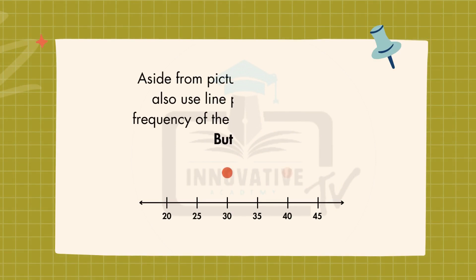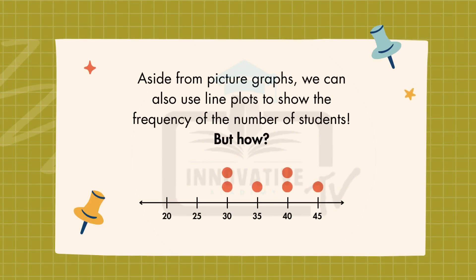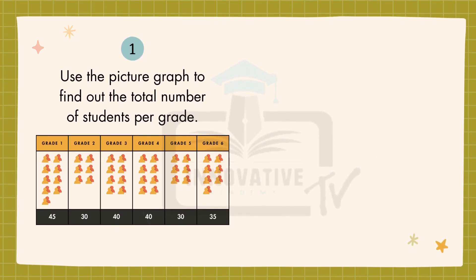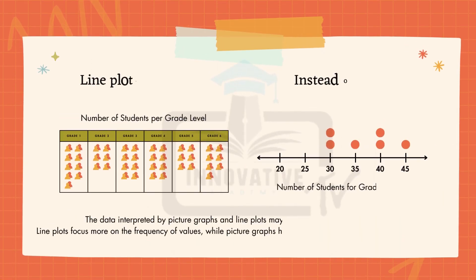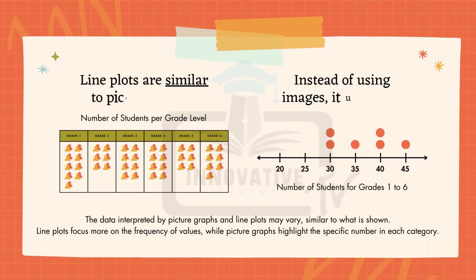Aside from picture graphs, we can also use line plots to show the frequency of the number of students. Use the picture graph to find out the total number of students per grade, then plot the total values on the line — plotting number of students for grades 1 to 6. Line plots are similar to picture graphs in showing number of students per grade level, but instead of using images, it uses dots.